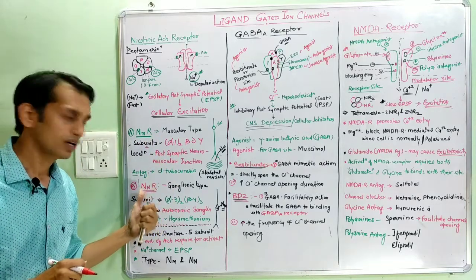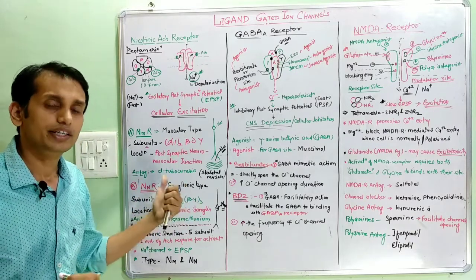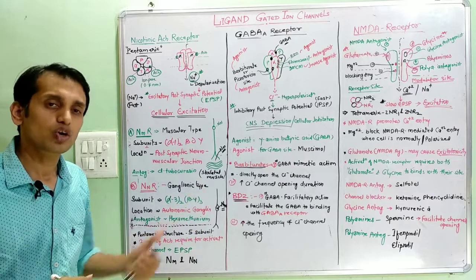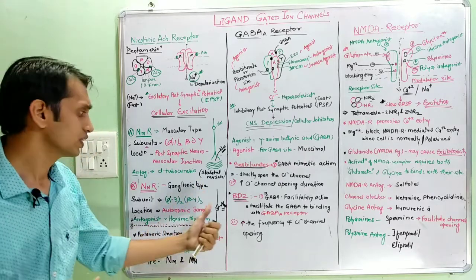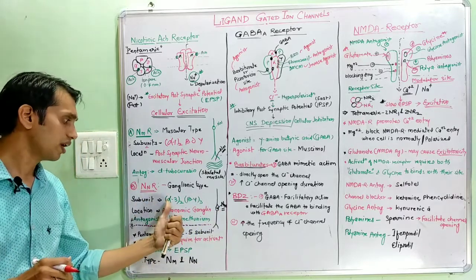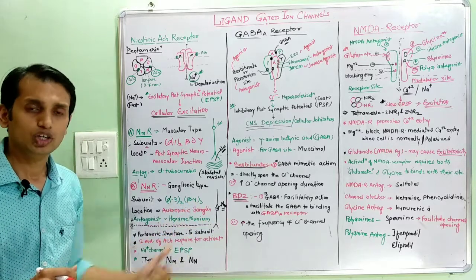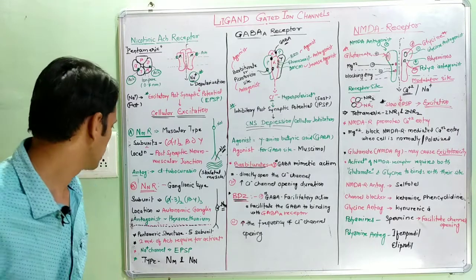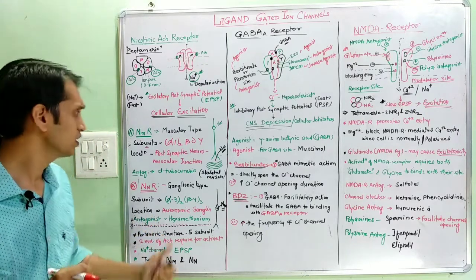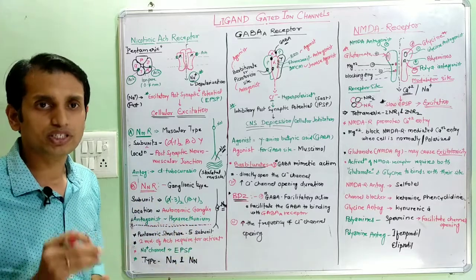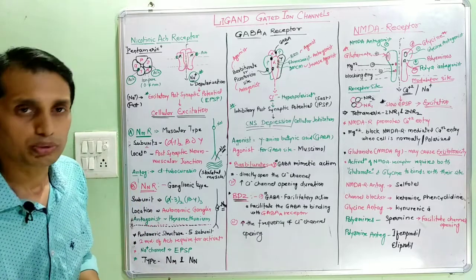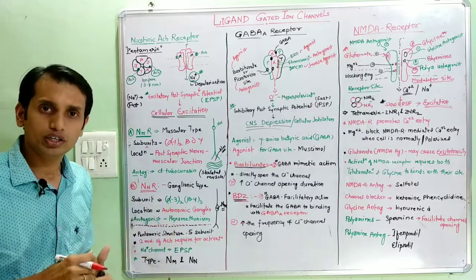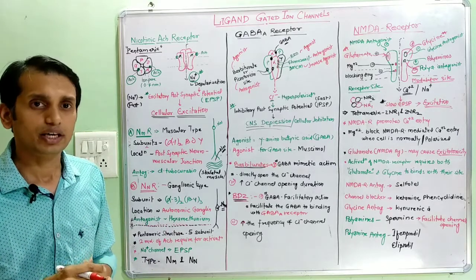The second type is the NN receptor, which is a ganglionic type. These receptors are found in the autonomic ganglia. They are formed by alpha 3 (two units) and beta 4 (three units) subunits. The antagonist for NN receptors is hexamethonium. Agonists include acetylcholine, carbachol, and nicotine.